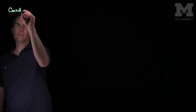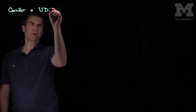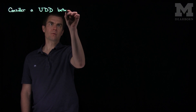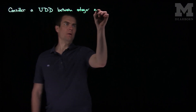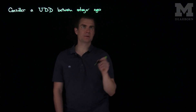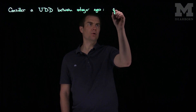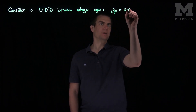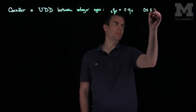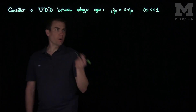So if we consider a uniform distribution of deaths between integer ages, we recall what this means. The first thing it means is that if we look at s*q_x, this will be s times q_x if s is between 0 and 1.